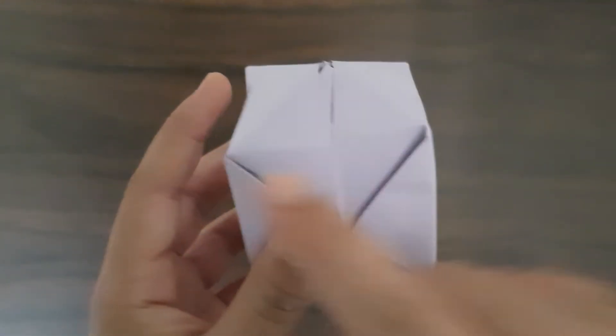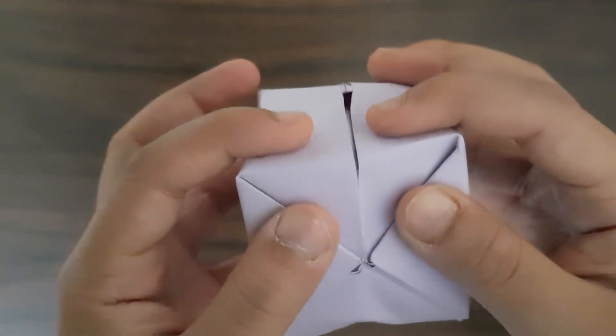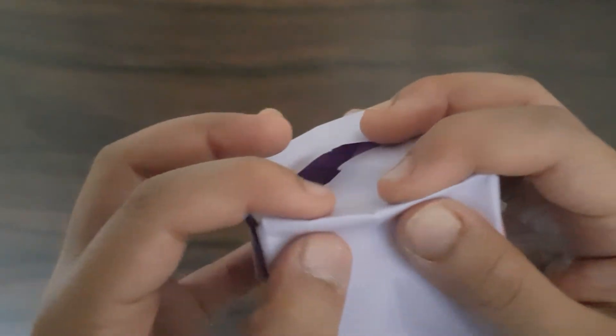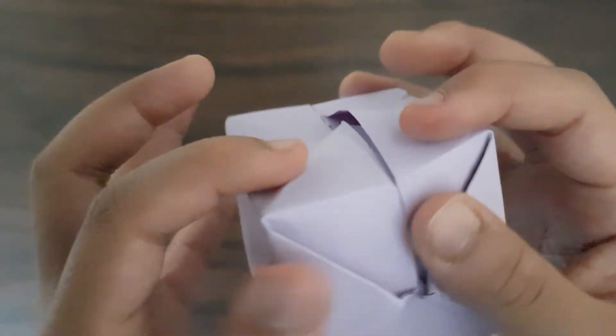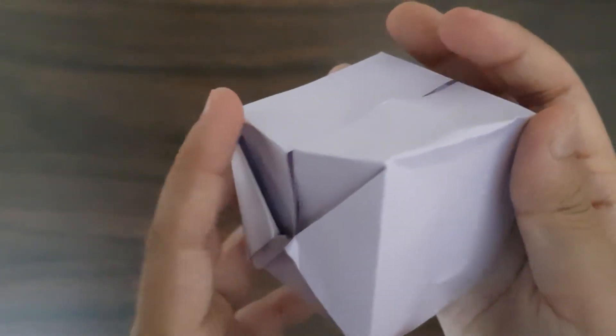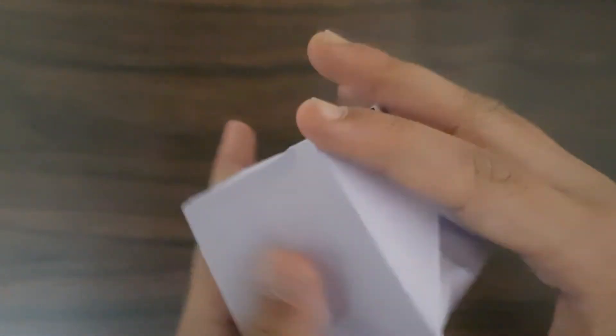We need to mountain fold and connect these two points like so, and repeat on all of the sides. So it is like this and it is starting to look like a cube.